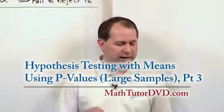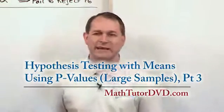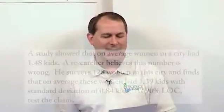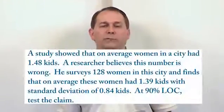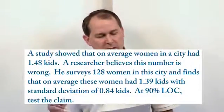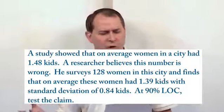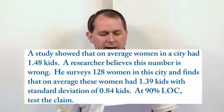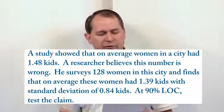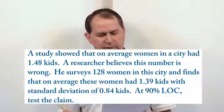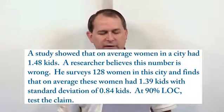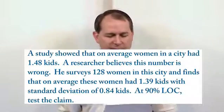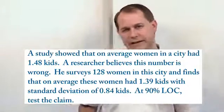So we have the following problem. A study showed that the average number of kids that women had is 1.48 children. A researcher believed this number is wrong. He surveys 128 women and finds an average of 1.39 kids with a standard deviation of 0.84. At a 90% level of confidence, test this claim.